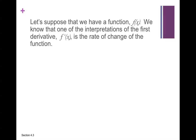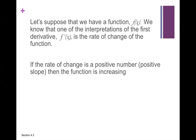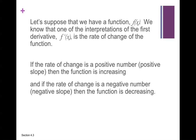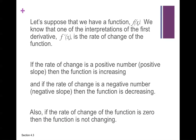Let's suppose that we have a function f of x. We know that one of the interpretations of the first derivative is the rate of change of the function. If the rate of change is a positive number — positive slope — then the function is increasing. And if the rate of change is a negative number — negative slope — then the function is decreasing. Also, if the rate of change of the function is zero, then the function is not changing.